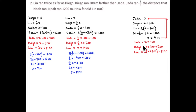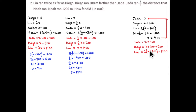So Jada equals x, Diego is x plus 300, or 700 meters, and Lin is twice that far — 1,400 meters. Here are several expressions and their equivalent values. Lin's expression is the most interesting, so let's practice with that.